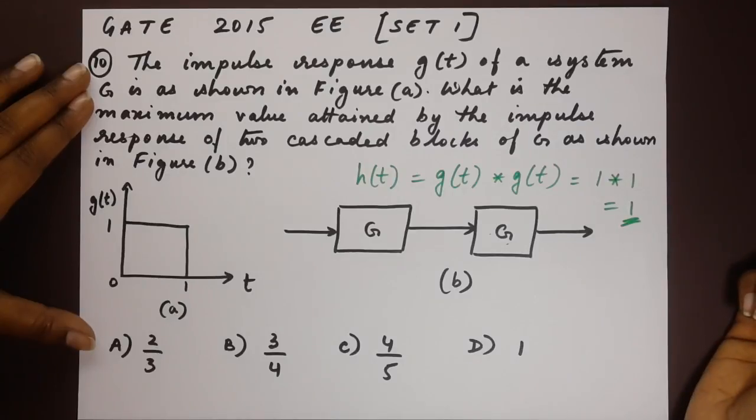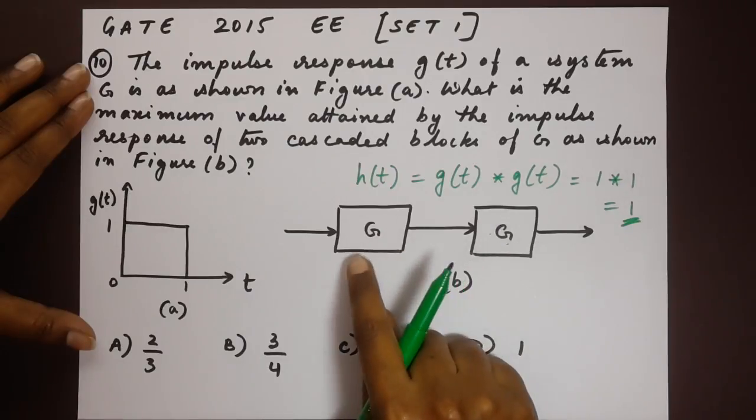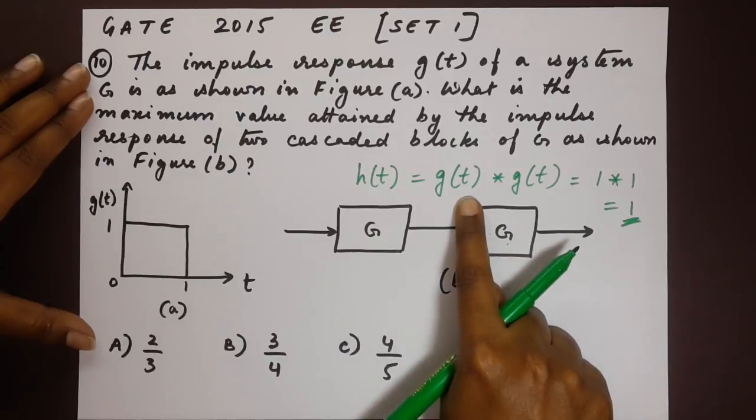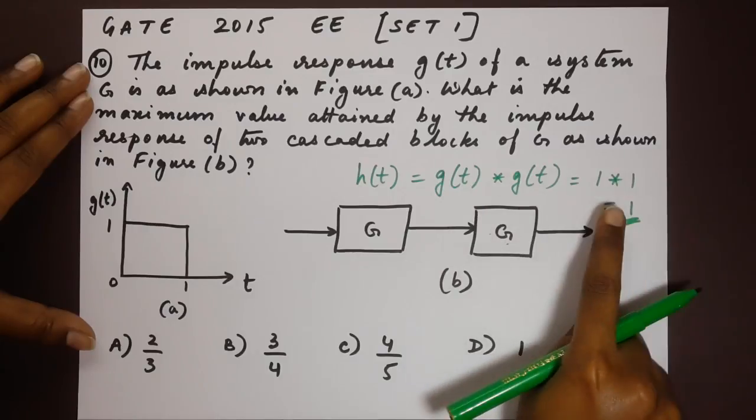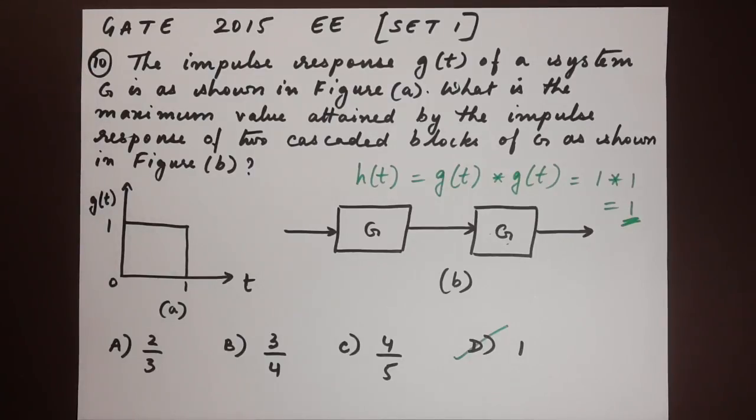It's quite basic, you will have to recall your formulas and the rules for blocks. For two cascaded blocks shown here we would have to multiply the responses g of t and g of t, which is 1 into 1 and 1. That matches option d. Well I hope this has helped.